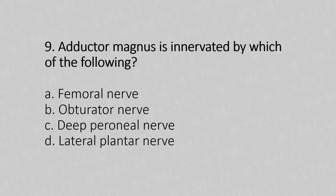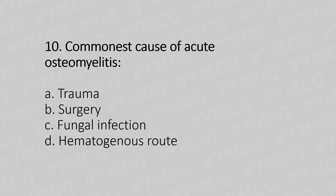Question 9: Adductor magnus is innervated by which of the following? Option A: femoral nerve. Option B: obturator nerve. Option C: deep peroneal nerve. Option D: lateral plantar nerve. The answer is option B — obturator nerve.